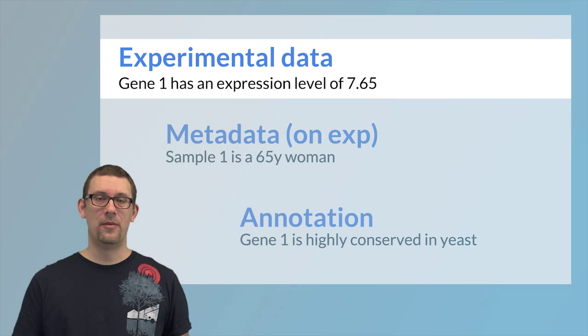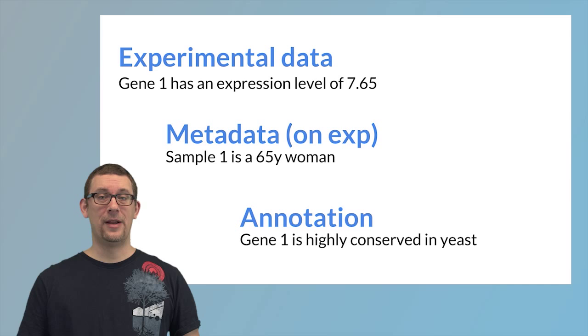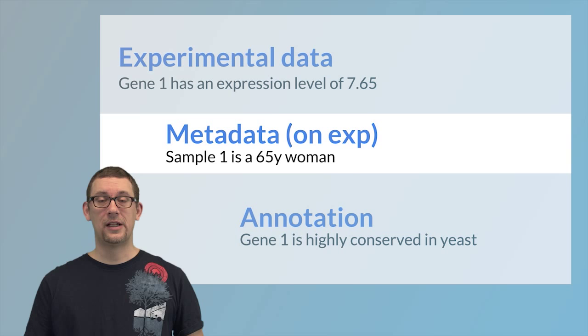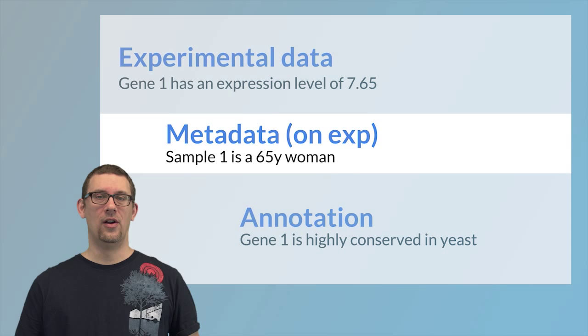Together with the experimental data, we have metadata on the experiment. Metadata on the experiment is annotation on the experiment, telling us more information about what do these numbers actually mean and what do they come from. So an example is information about the samples that was profiled in the experiment.